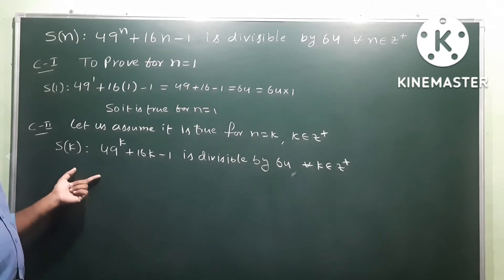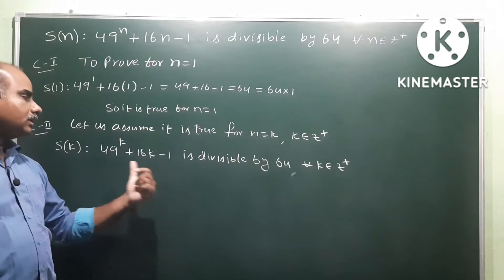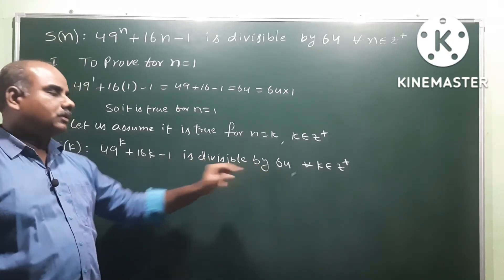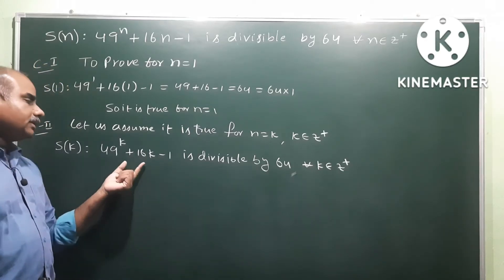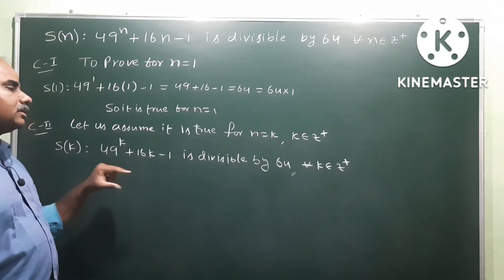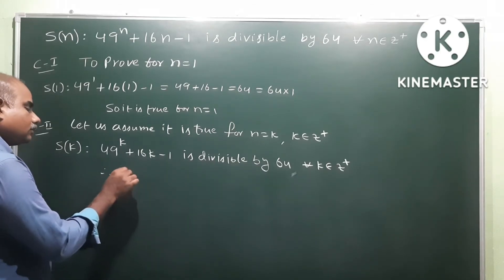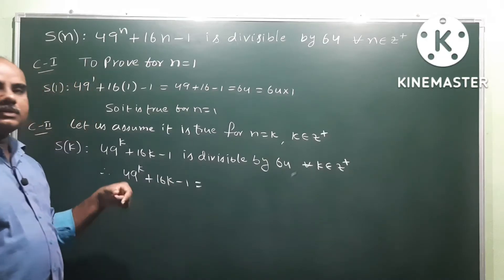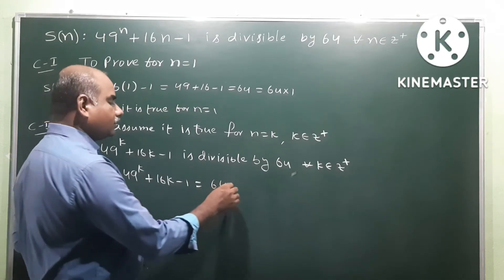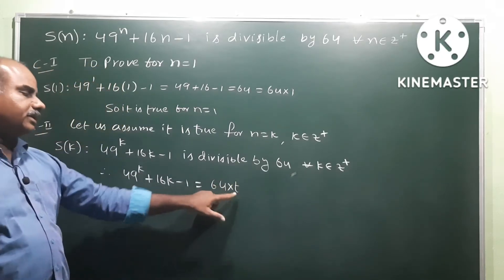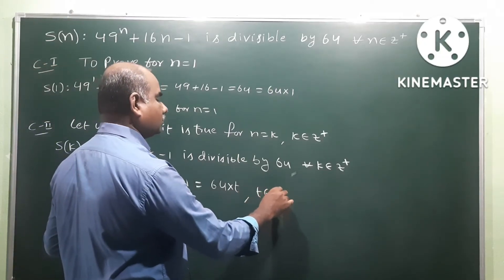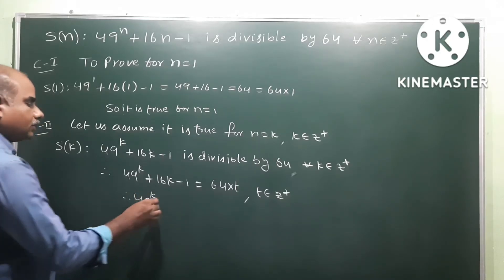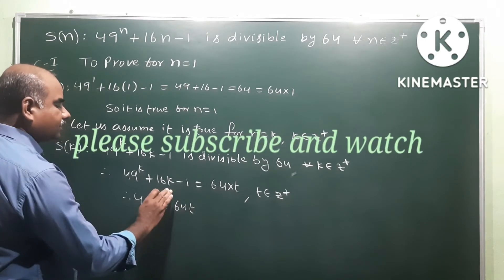We assume S(k) is true, that is, 49^k + 16k - 1 is divisible by 64. Since it is divisible by 64, we can write 49^k + 16k - 1 = 64t for some integer t. Rearranging, 49^k = 64t - 16k + 1.